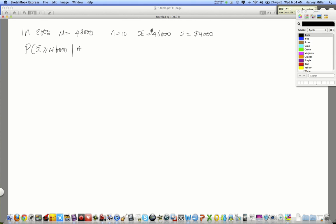So, the question would be, what is the probability of obtaining this sample mean, greater than or equal to $46,000, given a sample size of 10, a mean of $43,000, and a sample standard deviation of $4,000. Now, normally we don't write all that information in, but I'm just repeating it here so that you understand the context of the problem.